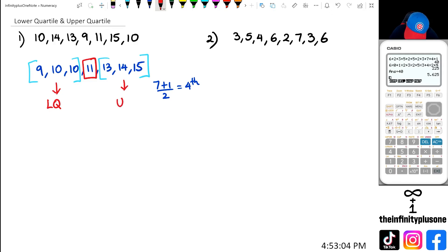And when you have 13, 14, 15, the middle number is going to be the upper quartile. So in this case, LQ, which is just a short form for writing lower quartile, equals 10. And then upper quartile equals 14, which we write as UQ.